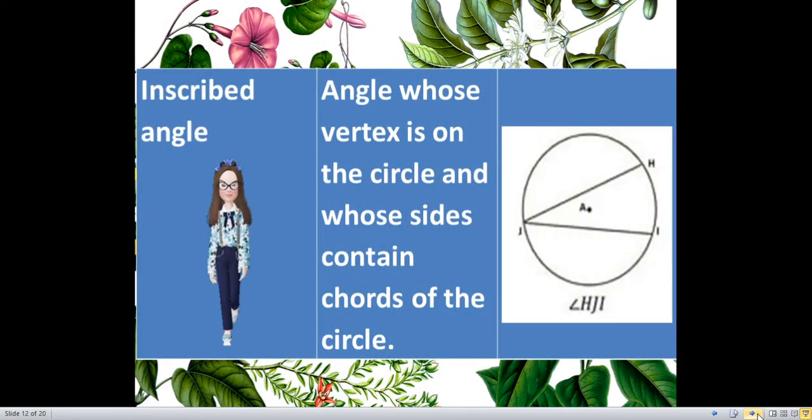Then, we also have the inscribed angle. Inscribed angle is an angle whose vertex is on the circle and whose sides contain chords of the circle. This time, it should contain chords, not radii. And, the vertex should be on the circle. So, this time, our vertex is this J. So, I can name the angle as angle HJI. Or, you can also name it as angle IJH. It will be the same. As long as the vertex is on the circle and it contains the chord of your circle.